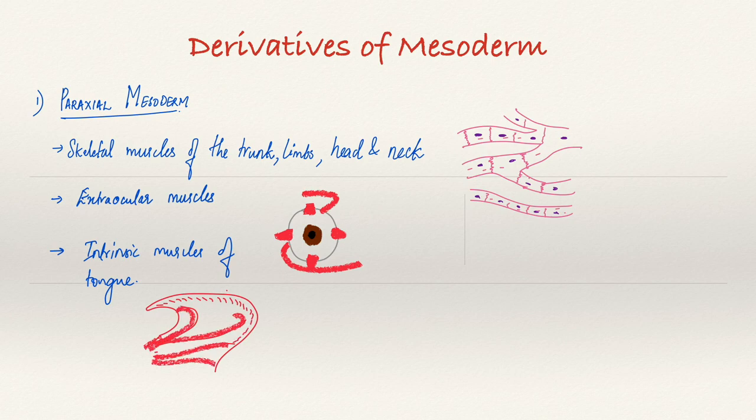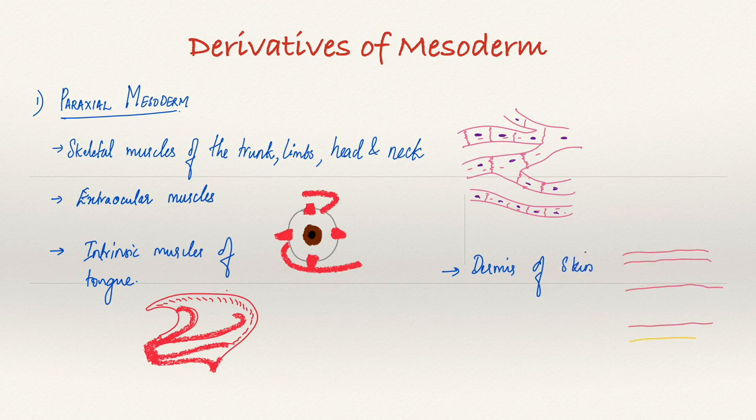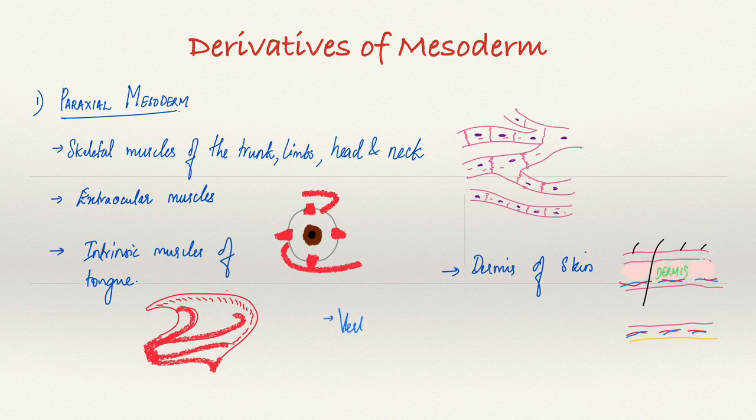Dermis of the skin is also formed by the paraxial mesoderm. The dermis contains connective tissues, the blood vessels, oil and sweat glands and the hair follicles. Finally, it also forms the vertebrae and the ribs.